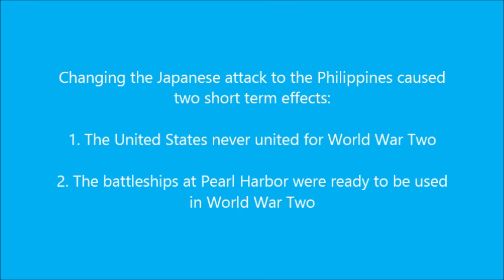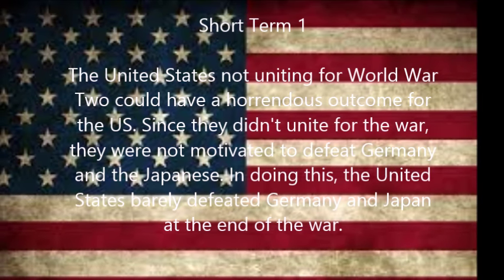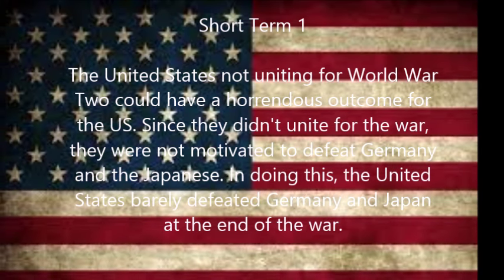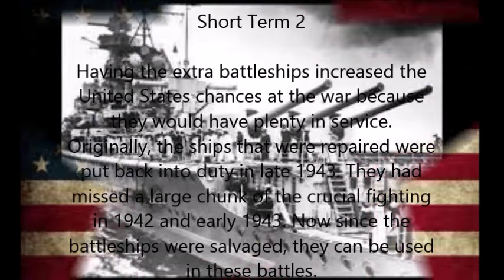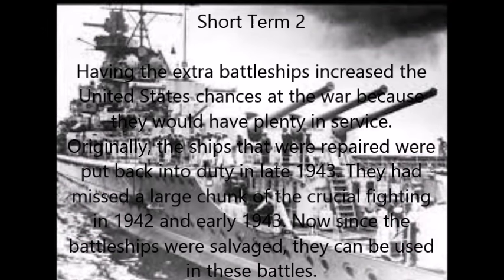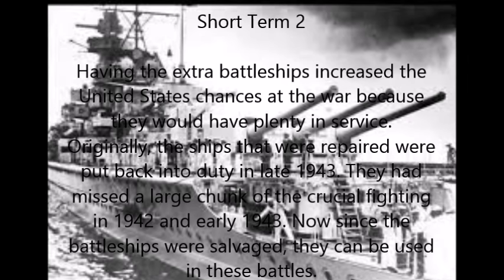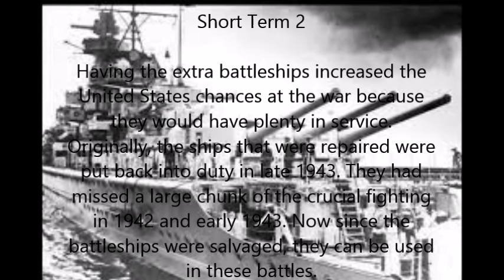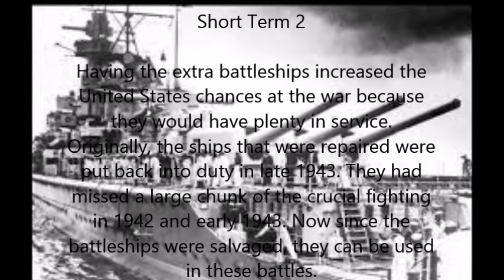Changing the Japanese attack to the Philippines caused two short-term effects. One, the United States never united for World War II. Two, the battleships of Pearl Harbor were ready to be used. Since they didn't unite for the war, they were not motivated to defeat Germany and Japan, and barely defeated them in the end. Having the extra battleships increased the United States' chances in the war. Originally the ships that were repaired were put back into duty in late 1943, missing crucial fighting in 1942 and early 1943. Now, since the battleships were never damaged, they could be used in those battles.